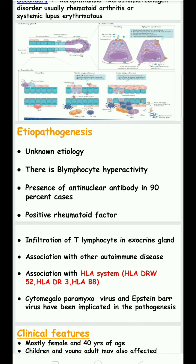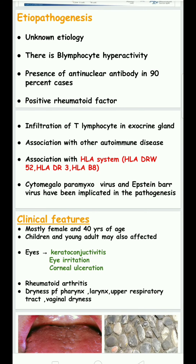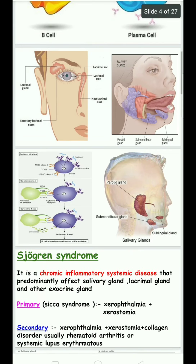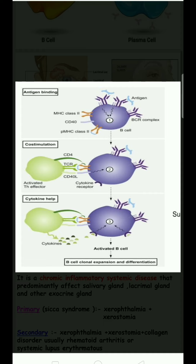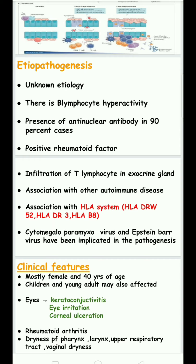Infiltration of T-lymphocytes in exocrine glands is also seen, and it is associated with other autoimmune diseases. Human leukocyte antigen (HLA) genes — specifically HLA-DRw52, HLA-DR3, and HLA-B8 — are affected. Cytomegalovirus and Epstein-Barr virus have been implicated in the pathogenesis.